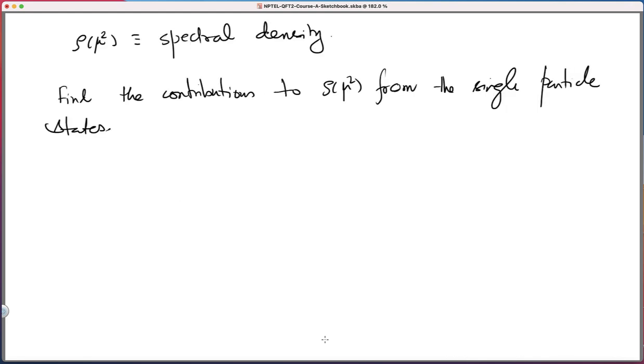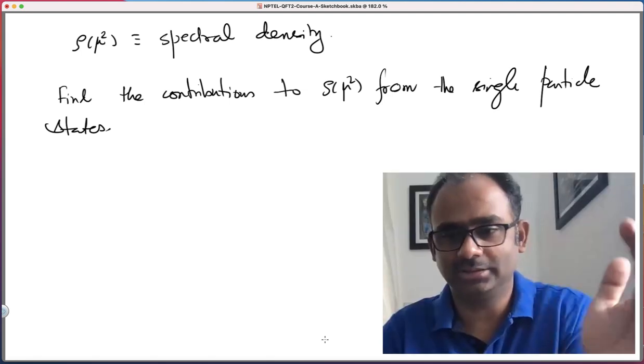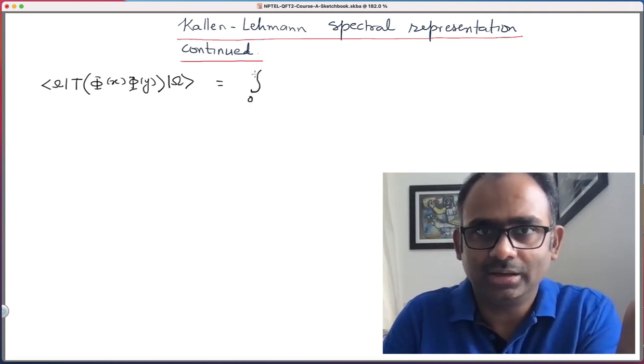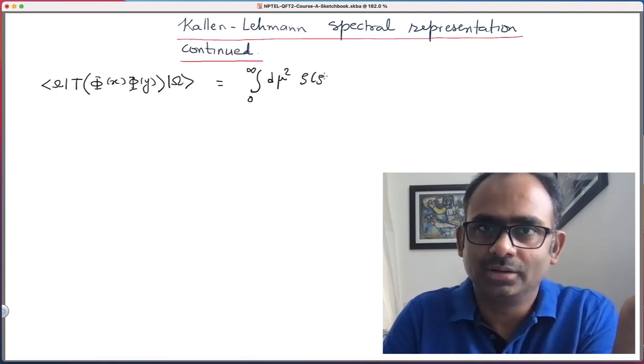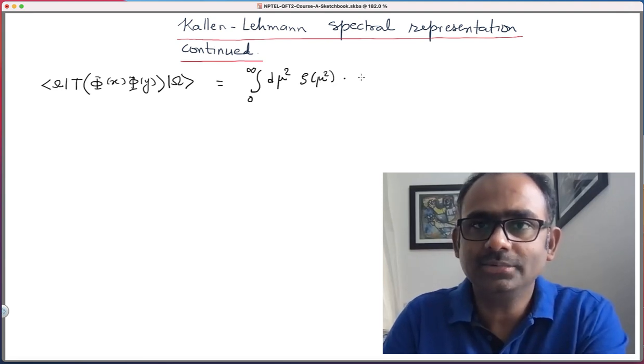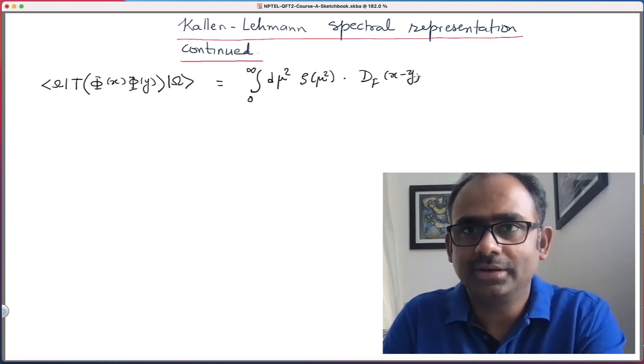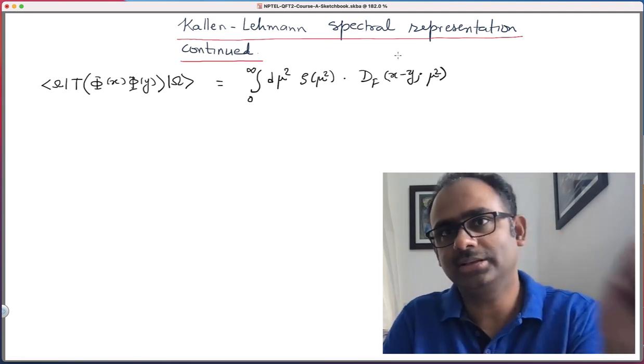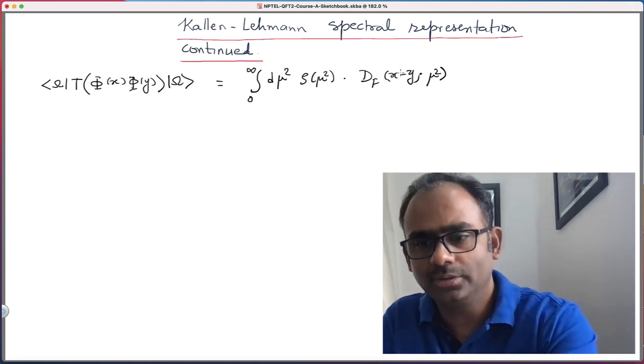That does not mean that you have particles of mass mu square in your theory. It just means that this quantity can be written as an integral over mu square of the spectral density times the Feynman propagator, where this propagator instead of having mass m, it has mass mu square. That is the notation here and you have to integrate over all of these.